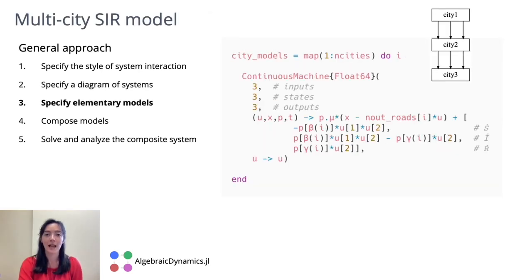In the last step, we specified how we want to compose systems. So in this step, we want to define what are the actual models that we want to compose. In this case, we want to compose three single-city SIR models. For each model, we have to specify a number of inputs, a number of states, here three corresponding to a susceptible, infected, and recovered population, a number of outputs,